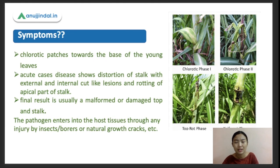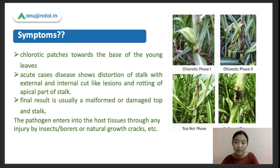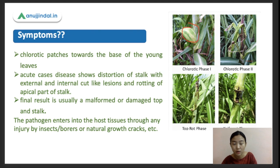The first characteristic symptom of this disease is the appearance of chlorotic patches - a patchy discoloring of the leaves where the chlorophyll pigment is disturbed. In that way, it's a deformity in the crops where yellowing of the leaves occurs, especially in the young leaves. In acute cases, the disease will also start showing distortion of the stalk as well as external and internal cut-like lesions and rotting.